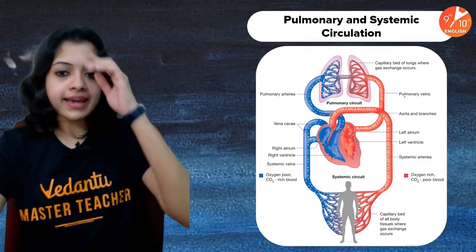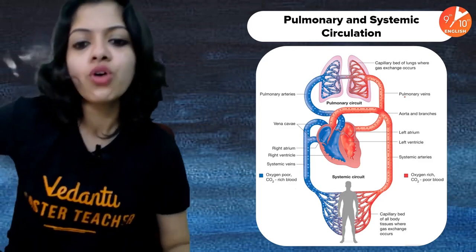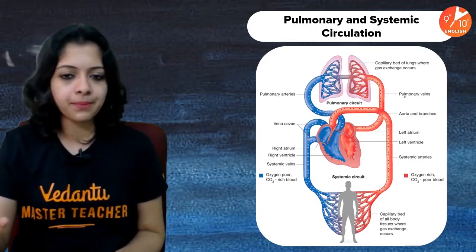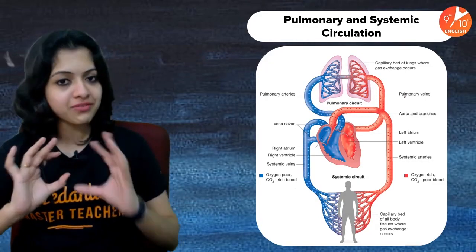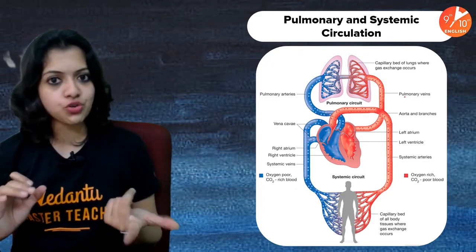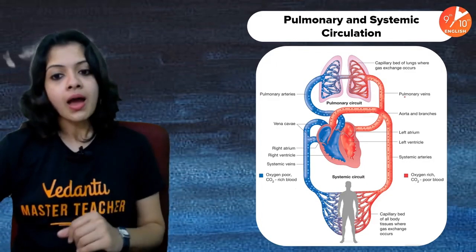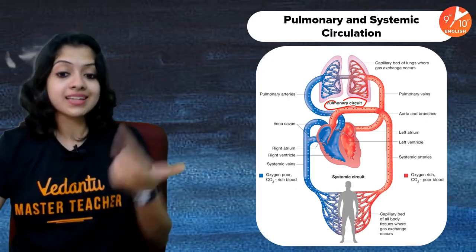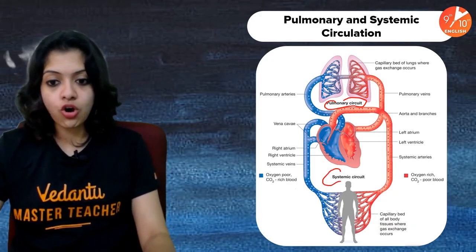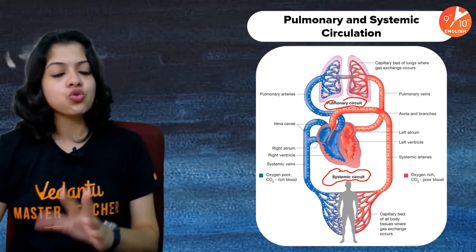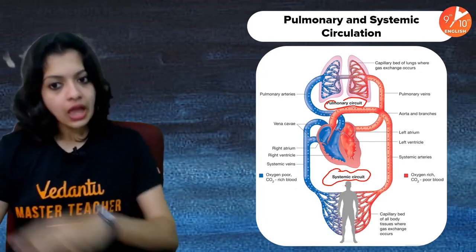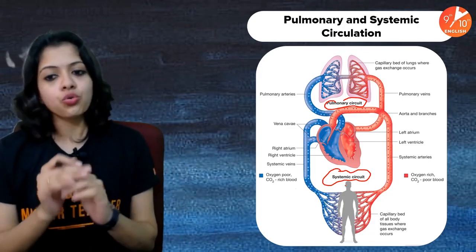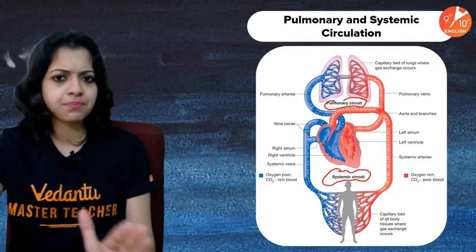Here is an outline of circulation. The heart and lungs share a separate pathway called the pulmonary circuit, while the heart and the rest of the body use the systemic circuit. Together these two form the overall double circulation process in the human body, which we will learn in detail in the upcoming session.